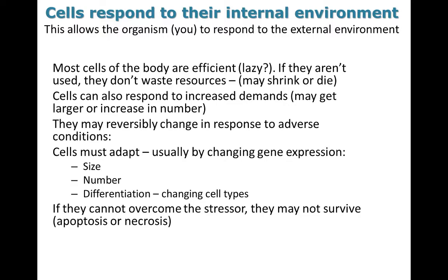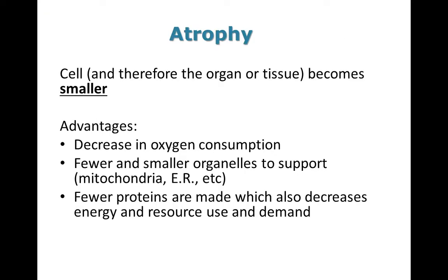Cells are able to respond or adapt to both increased and decreased demands. This is usually done by changing gene expression, basically by changing the proteins that each cell is expressing. They might go so far as to become a totally different cell, and that's what happens in the case of a cancer. Some adaptations or changes are reversible, but if cells can't overcome the stressor then they may not survive.